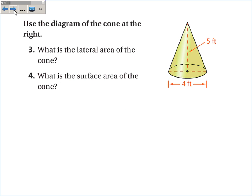One more question to kind of wrap up the cones. What is the lateral area of the cone? Well, the lateral area is pi RL. And we're not given L. So we've got to find that one first. This is L. This is the height of 5. And this is going to be 2, the radius.